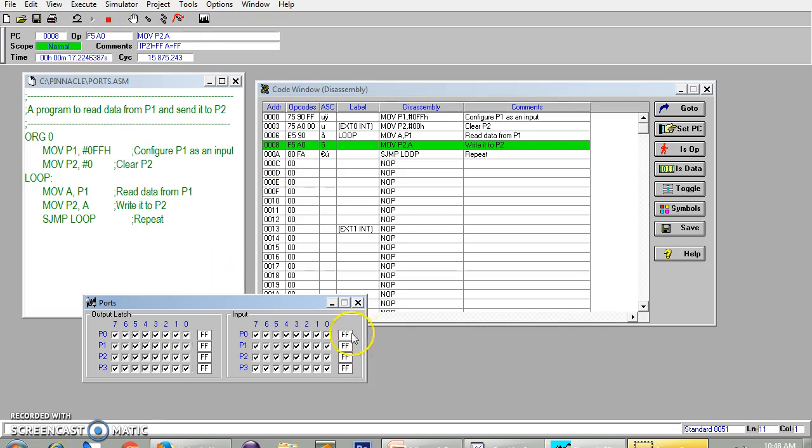So the super loop where the code is being executed. And now we can see whatever I write to P1 input latch will reflect onto the P2 output latch.